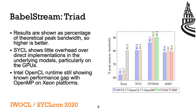First, to BabelStream. These are the results of running triad on our devices. The chart shows the achieved bandwidth as a percentage of the theoretical peak of each device from the table before, so higher is better. We show SYCL and OpenCL results for all the platforms, along with CUDA and HIP on the NVIDIA and AMD respectively, and OpenMP on the Xeon CPU. Throughout all our results, we show the Iris Pro GPU as NUC, which is the device that it is in.